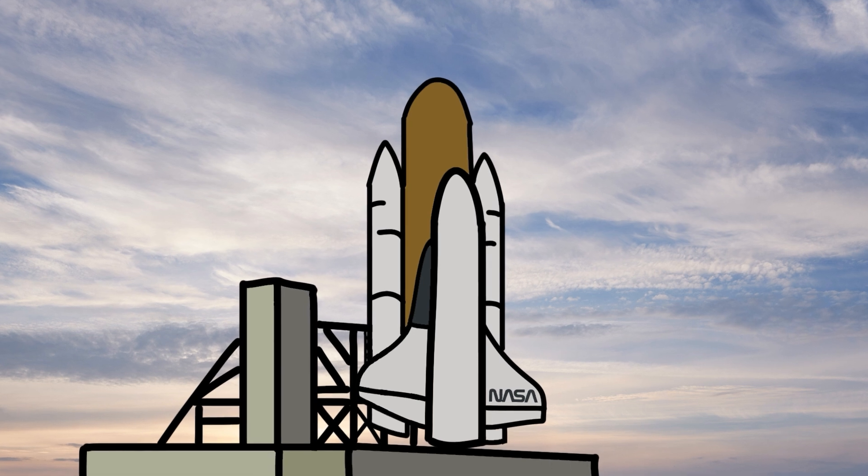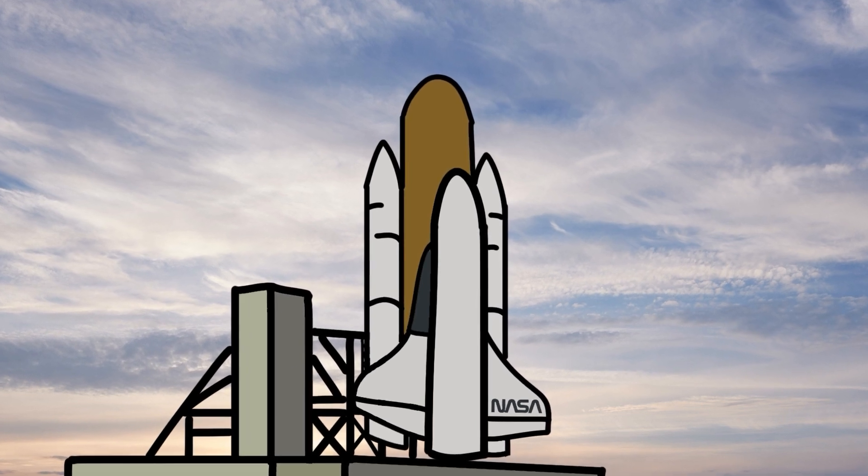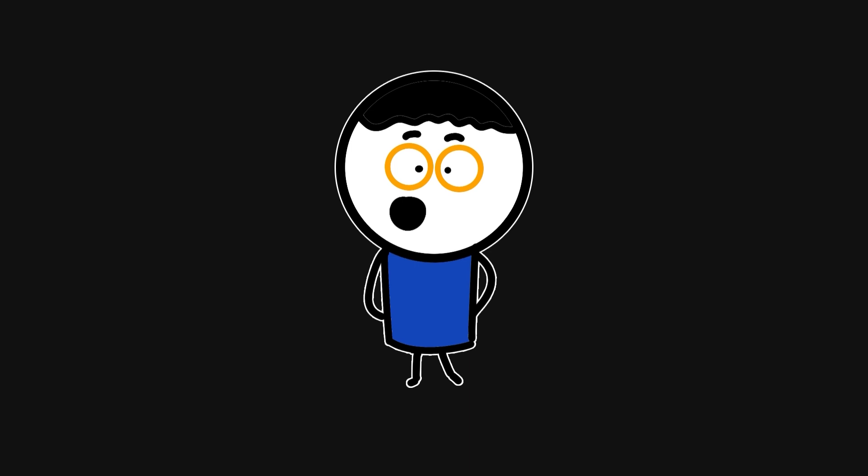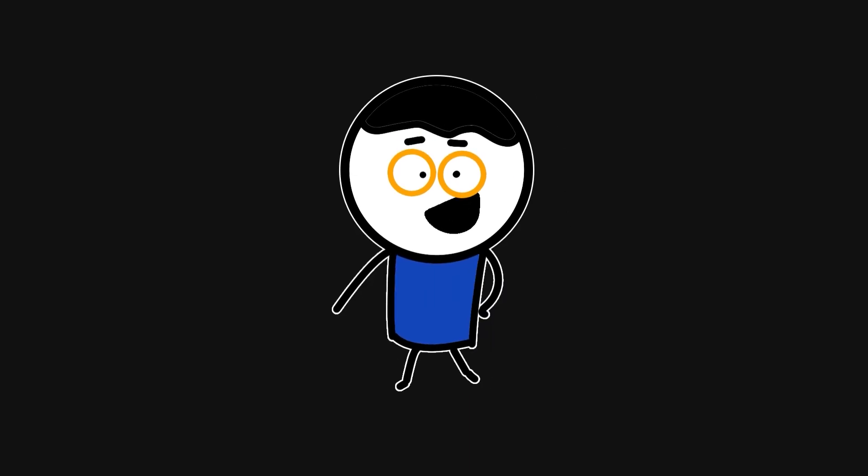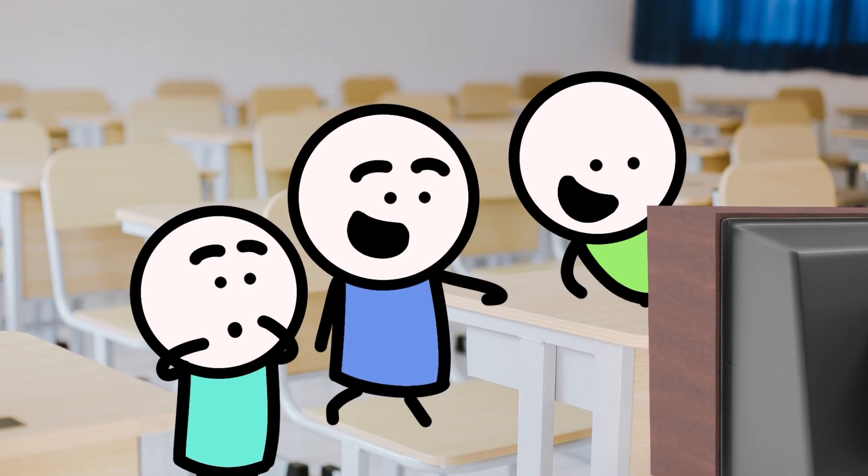The Challenger disaster. On January 28, 1986, seven astronauts boarded the space shuttle Challenger, preparing for launch. Among them is Christa McAuliffe, a school teacher set to become the first civilian in space. Across the country, millions of students watched live and started to see history in the making.